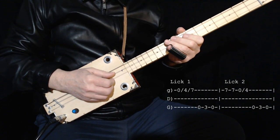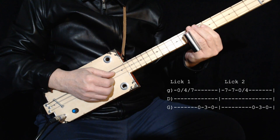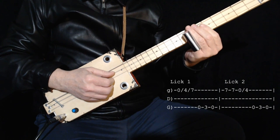Now lick two starts on seven and it's seven, seven, zero, four on the high string.